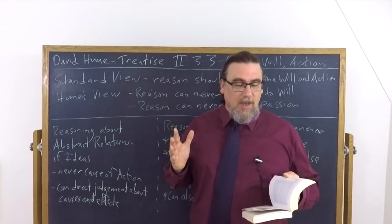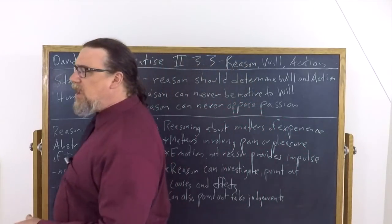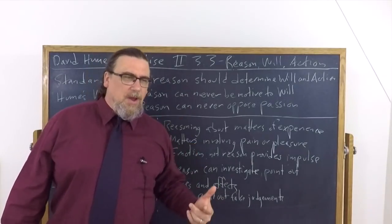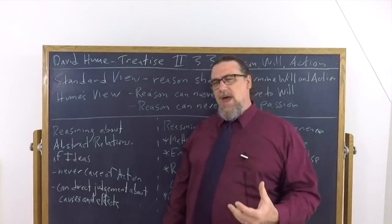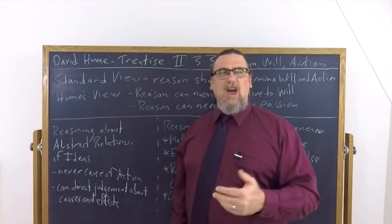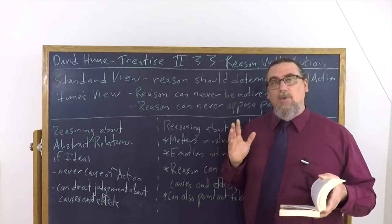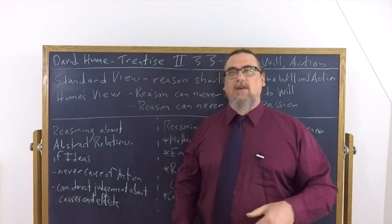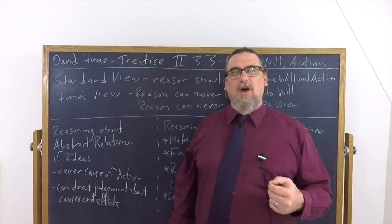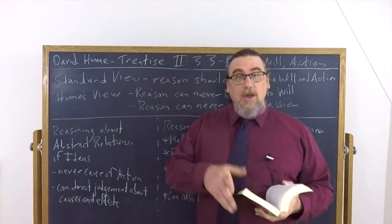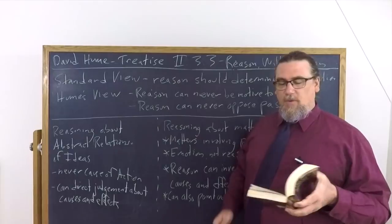So here's what he says. Nothing is more usual in philosophy and even in common life than to talk of the combat of passion and reason to give the preference to reason. Now, what does that mean? To give the preference to reason, it means that we evaluate ourselves in terms of whether we are following rationality and whether we have developed our rationality. Insofar as we have, we're virtuous or good. Insofar as we're not, perhaps we've developed it but we're not following rationality. We're bad or vicious. And he goes on and says, every rational creature is obliged to regulate his actions by reason. So you should do the sorts of things that everyone else who's a rational being would likewise do. Your motivation should be rationally explicable to other people. They should be worked out in a rational fashion and you should stick to that.